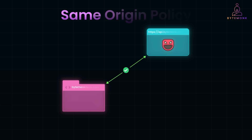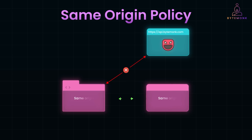Enter the Same Origin Policy, or SOP. It's a strict browser rule that blocks requests between different origins. It says a web page can only make API requests to the same origin — the same domain, protocol, and port from which it was loaded.